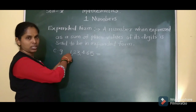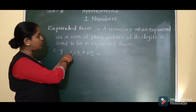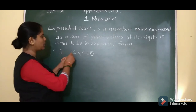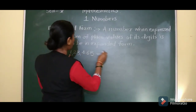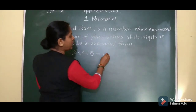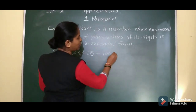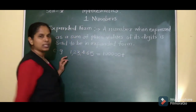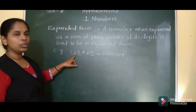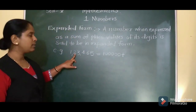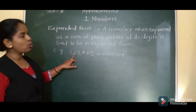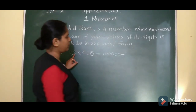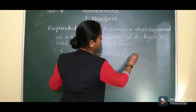The first digit is 1, which is at the lakhs place. So the place value of 1 is 1 into 1 lakh, that is 1 lakh. Plus 2 — digit 2 is at the 10,000 place, so the place value of 2 is 2 into 10,000, which is 20,000.